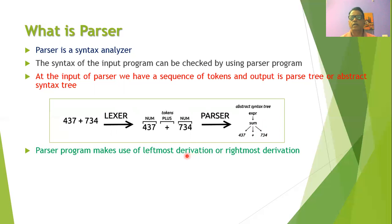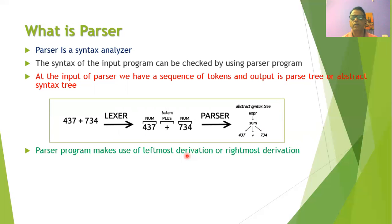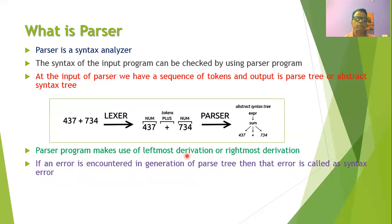Whenever we write any parser program, it will make use of either leftmost derivation or rightmost derivation. The grammar of a programming language can be described by a context-free grammar, and in a context-free grammar, given an input string, it is possible to obtain the leftmost or rightmost derivation. The parser program does the same thing.